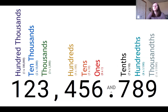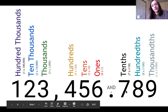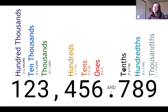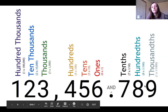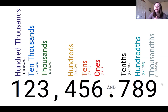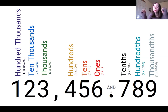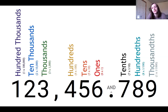So to find the value of the seven right here in the tenths place, you would take seven times one tenth, which gives us seven tenths, or seven over ten. For the eight, it would be eight times one over one hundred, or eight hundredths. And for the thousandths, it'd be nine times one over one thousand, or nine thousandths. So that's how you find the expanded form of decimal numbers like this.